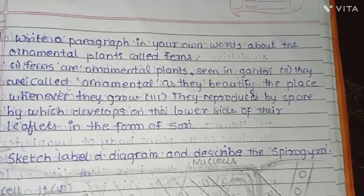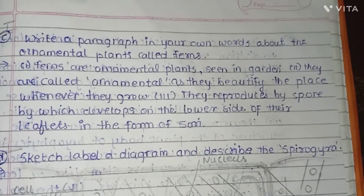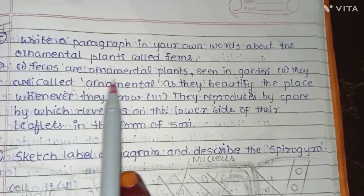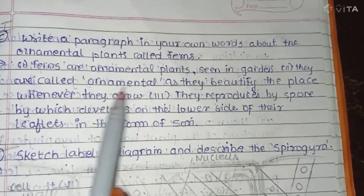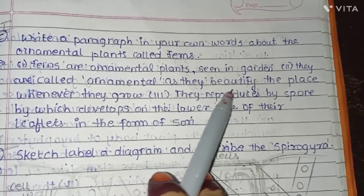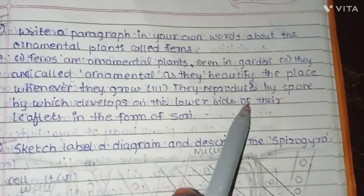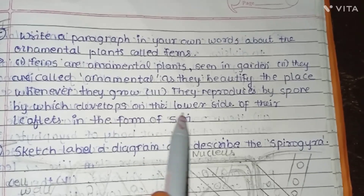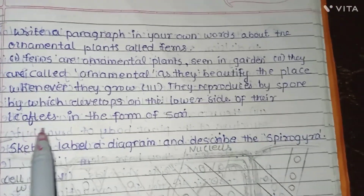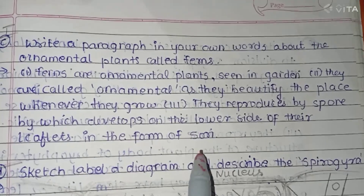Next question: write a paragraph about ornamental plants called ferns. Ferns are ornamental plants seen in the garden. They are called ornamental as they are beautiful wherever they grow. They reproduce by spores, which develop on the lower sides of their leaflets in the form of sori.